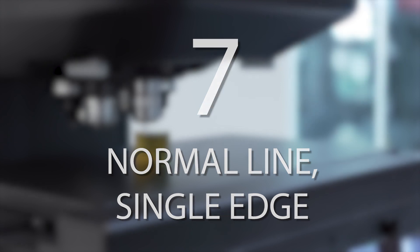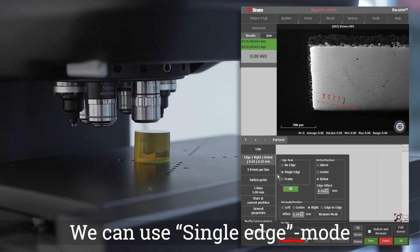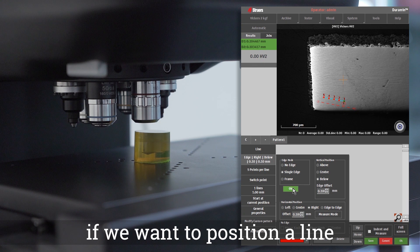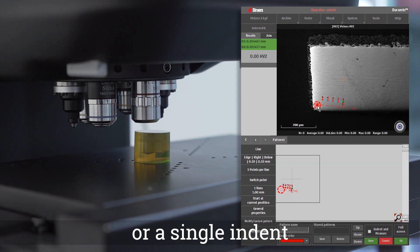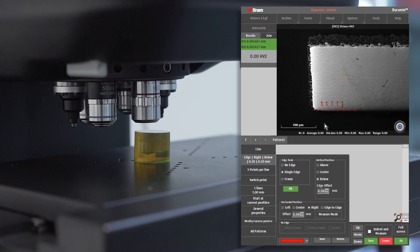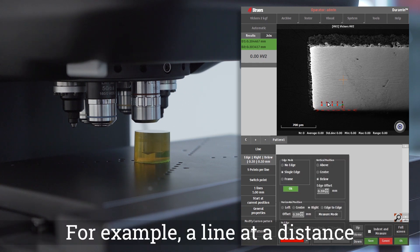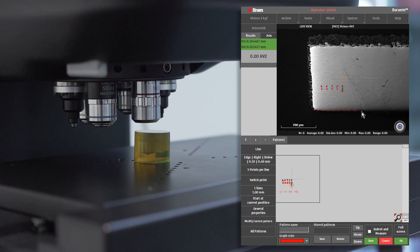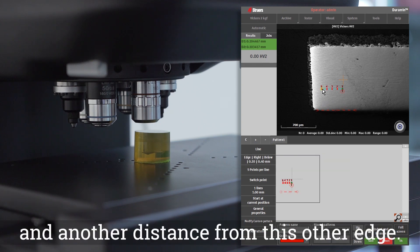Normal Line Single Edge. We can use Single Edge Mode if we want to position a line or a single indent at a specific distance from two edges. For example, a line at a distance from this edge and another distance from this other edge.